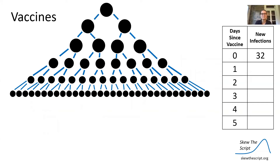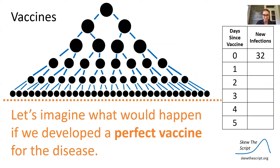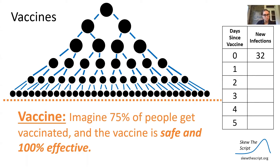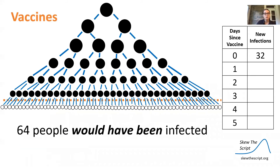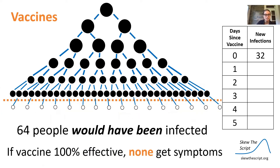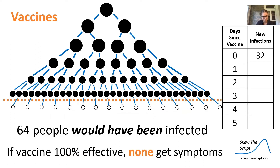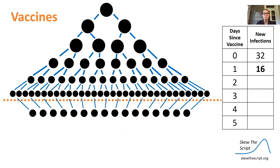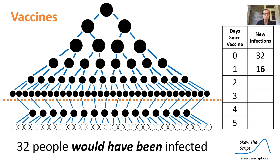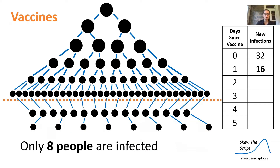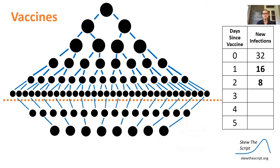Let's think of a slightly different scenario in which a perfect vaccine is developed. Seventy-five percent of people get vaccinated, and the vaccine is safe and 100% effective. On day one there would be 64 new infections, but 75% of them are vaccinated, so none of them get symptoms — only 16 people are infected. On day two, 32 people would have been infected, but 75% are vaccinated, so only eight people are infected.